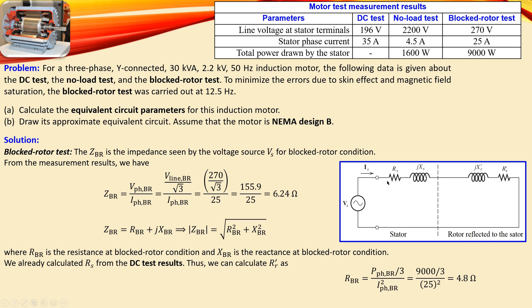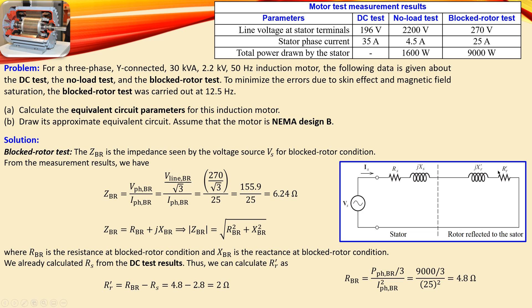From the DC test we already know Rs = 2.8 Ω. In the block rotor test, Rs and Rr' appear in series, so the measured Rbr = 4.8 Ω is their sum. Therefore, the referred rotor resistance is Rr' = Rbr − Rs = 4.8 − 2.8 = 2.0 Ω.